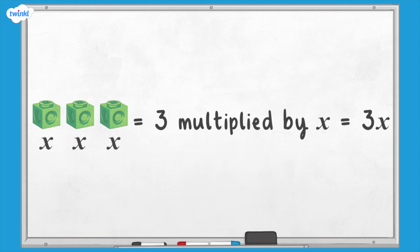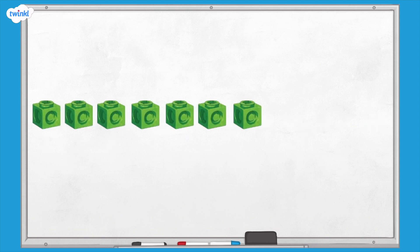Can you write an expression for this image? Pause here and have a go. There are seven interlocking cubes so we have seven multiplied by x. We write this as 7x.